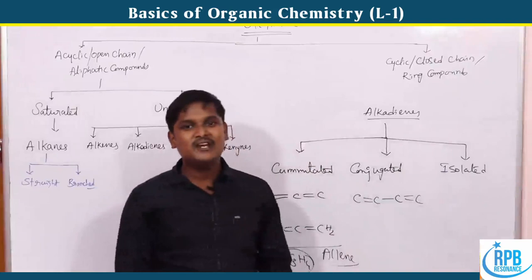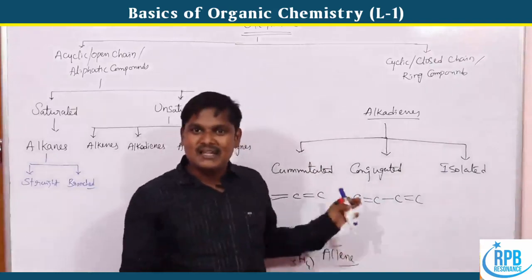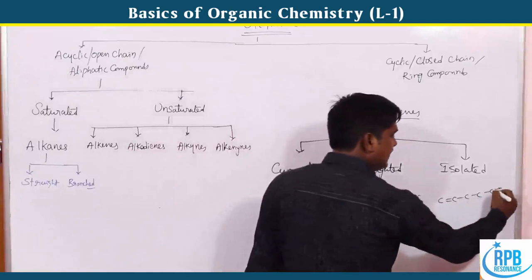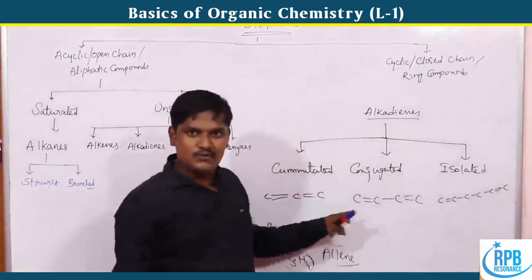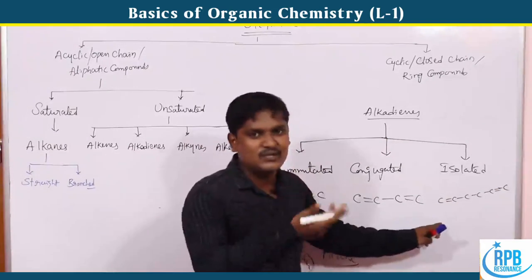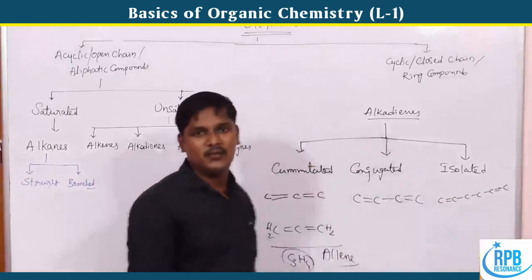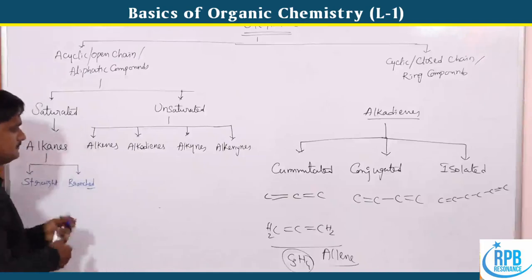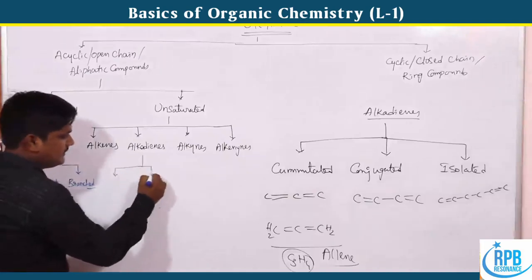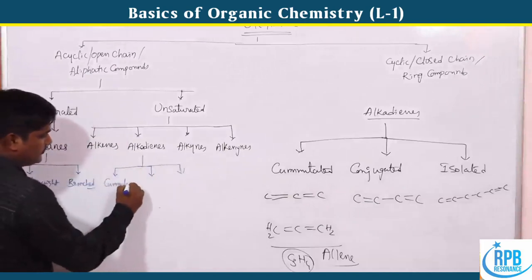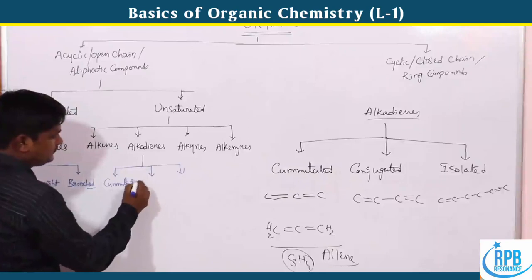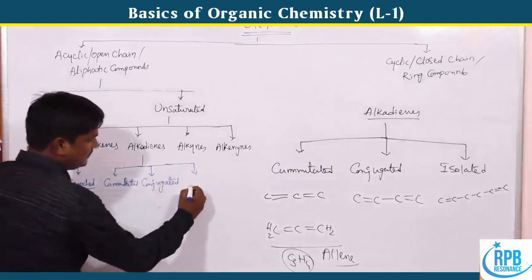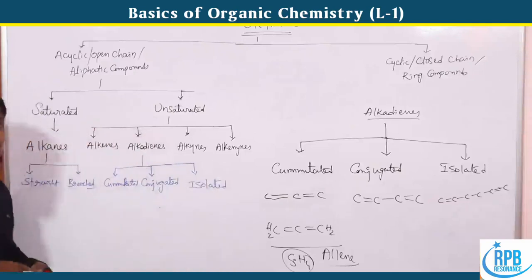The third type is isolated compounds — where two double bonds are present but are neither cumulated nor conjugated; they are separated by more than one single bond. So alkadienes are classified into three types: cumulated, conjugated, and isolated.